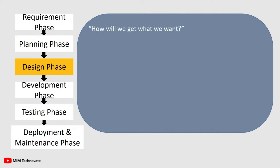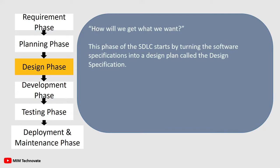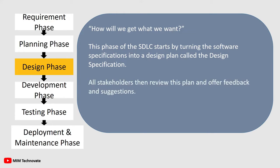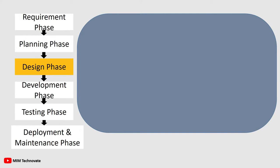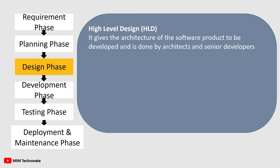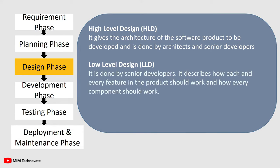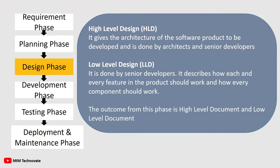Design Phase — How well do we get what we want? This phase starts by turning the software specifications into a design plan called the design specification. All stakeholders review this plan and offer feedback and suggestions. There are two kinds of design documents developed in this phase: High Level Design, which gives the architecture of the software product and is done by architects and senior developers; and Low Level Design, done by senior developers, which describes how each feature and every component should work. The outcome from this phase is the High Level Document and Low Level Document.